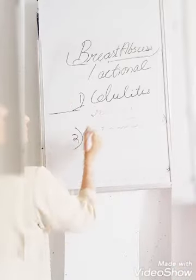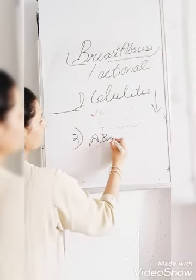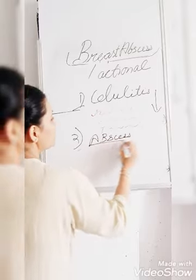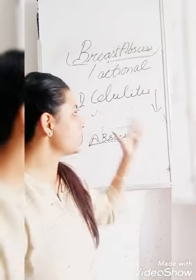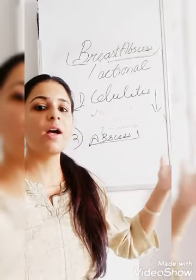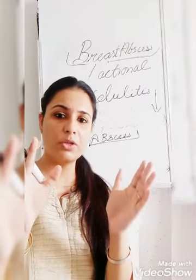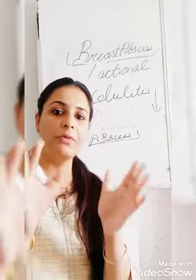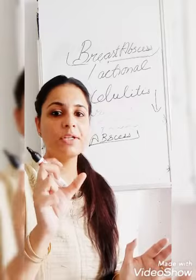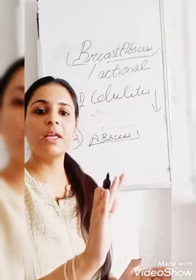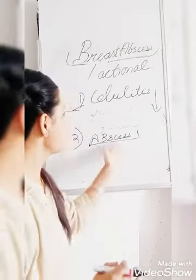Then afterwards the cellulitis will turn into an abscess. The features of the abscess stage are pus formation; you will find a fluctuating swelling on examination, and there will be throbbing pain.